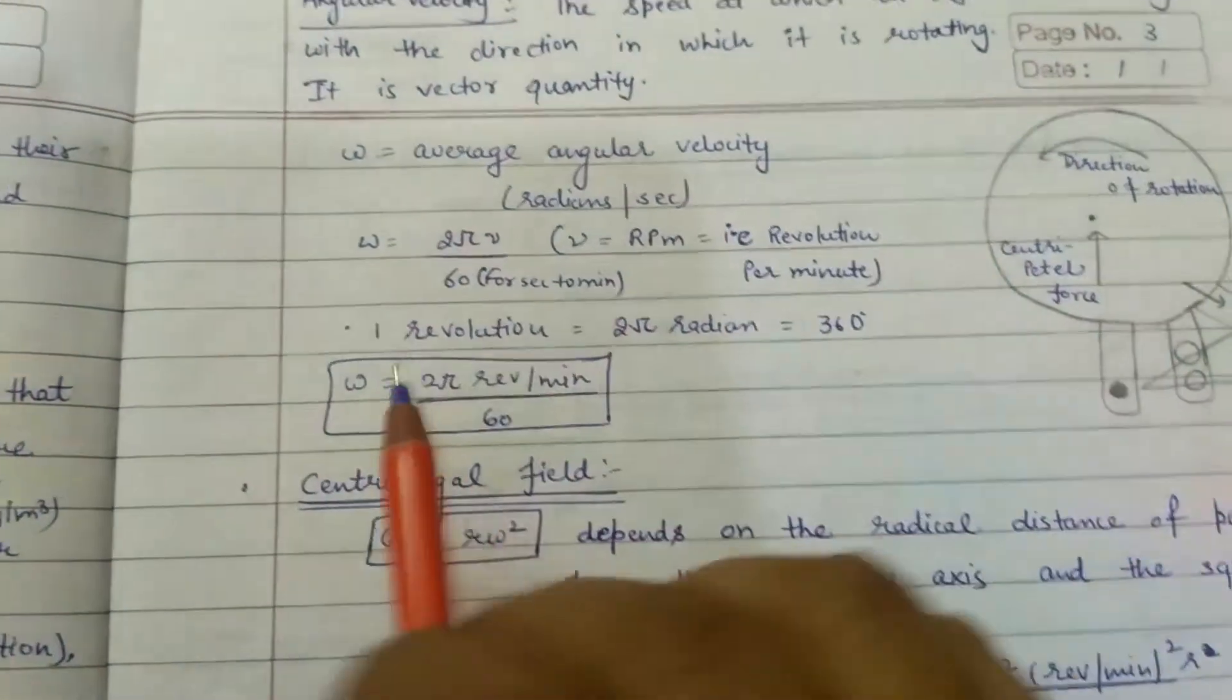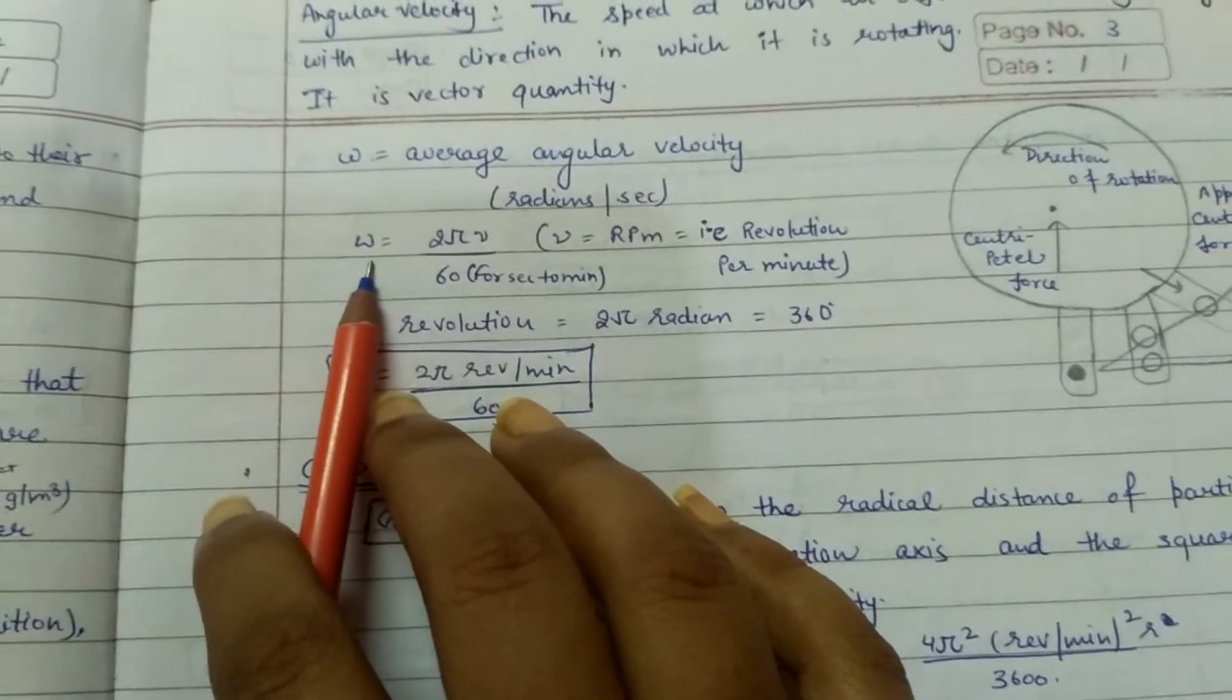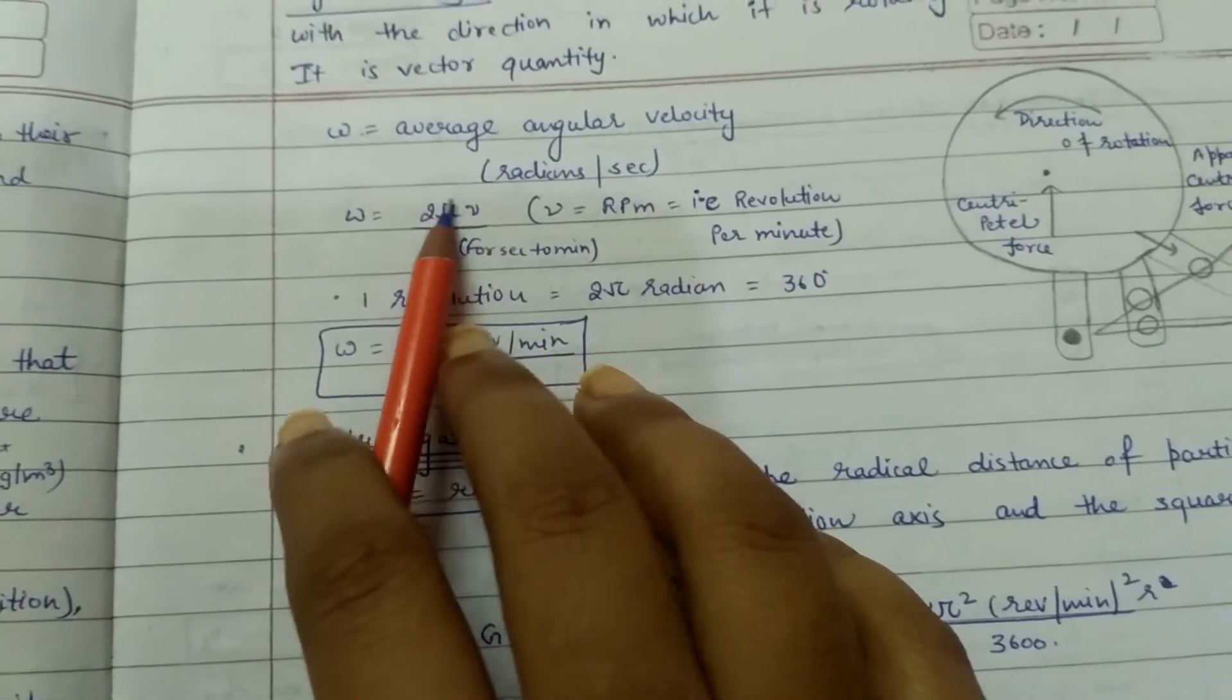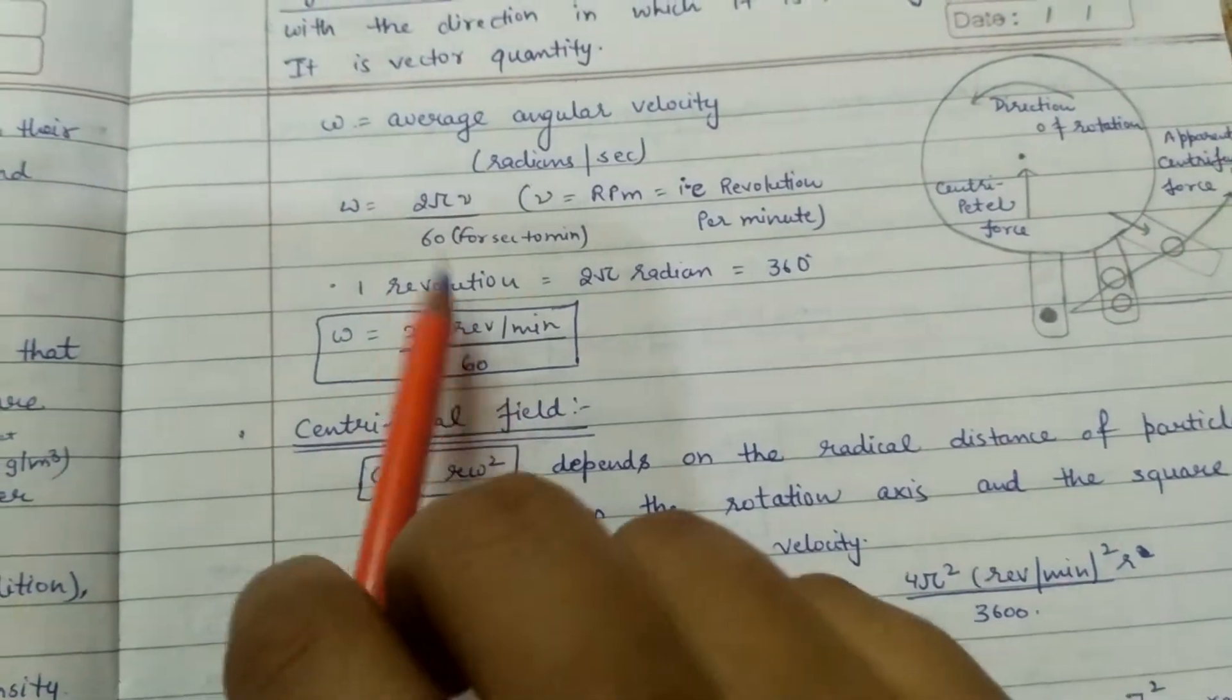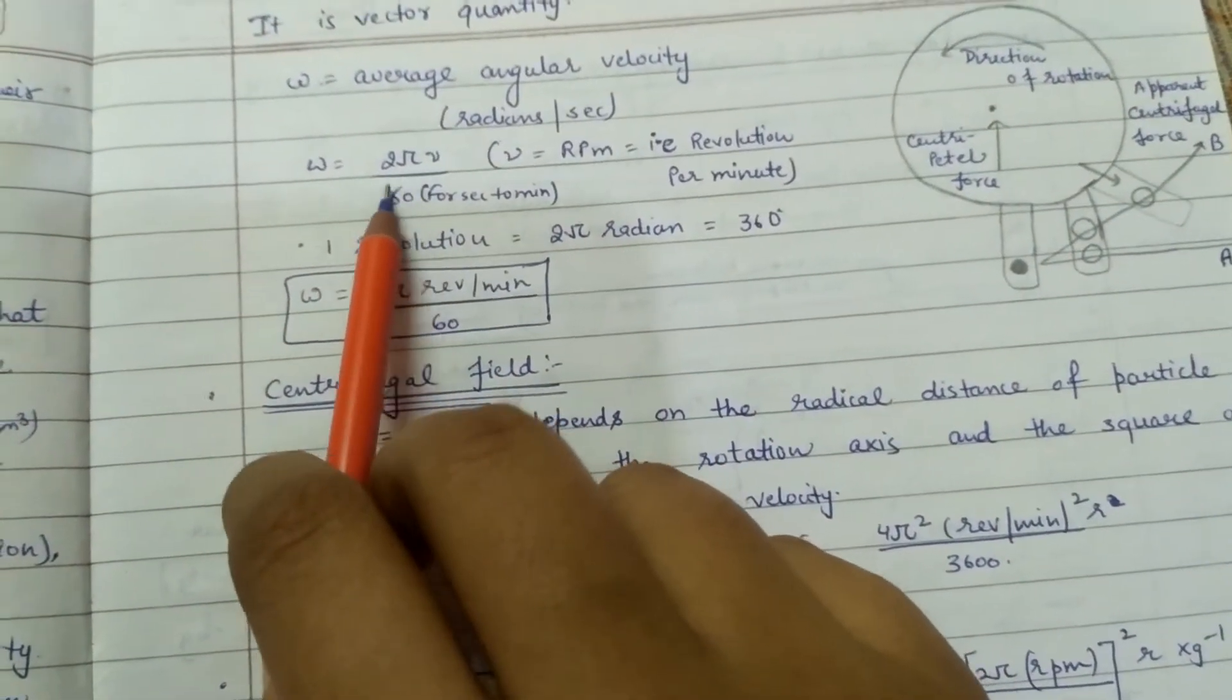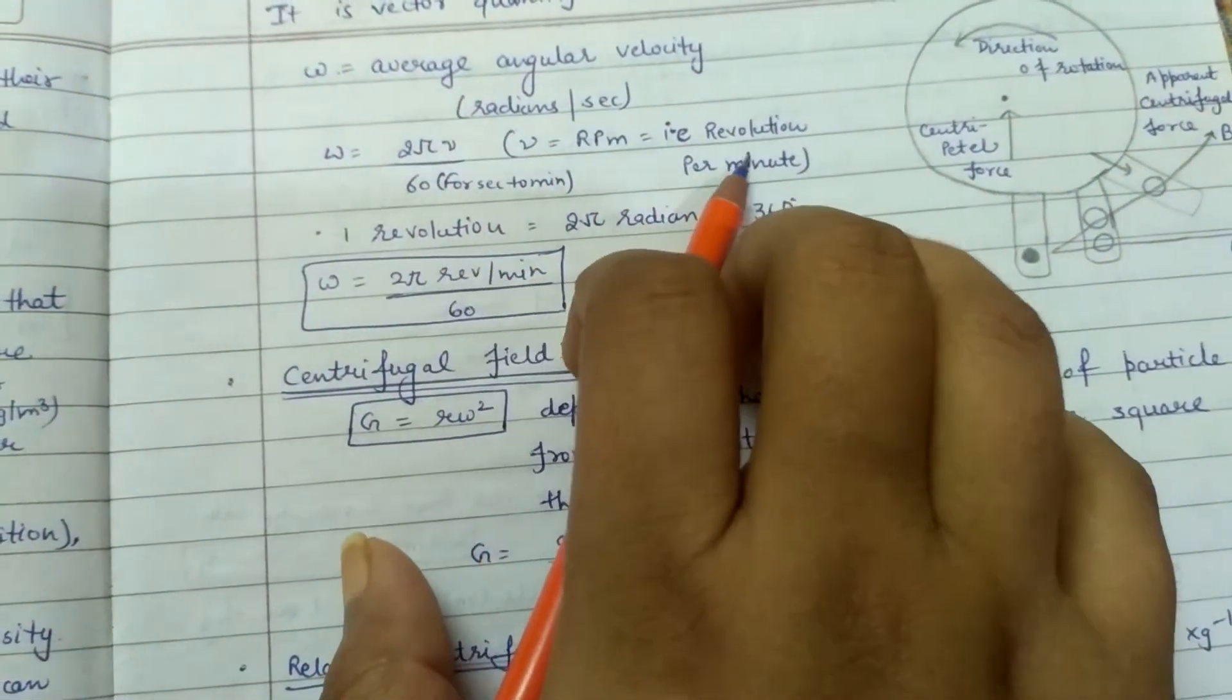Omega is the average angular velocity, which is always in radians per second. But we need to convert this to revolutions per minute. When you write omega as 2 pi mu, mu denotes the frequency in revolutions per second. To convert to rpm, revolution per minute, you divide by 60.